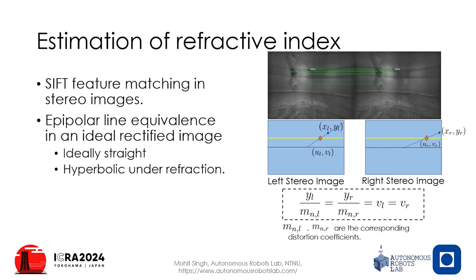At the core of the derivation lies the equivalence of the epipolar line of a given feature correspondence pair. Due to the refractive distortion, a straight epipolar line is warped into a hyperbola. Distortion coefficient M is found to warp the hyperbola back into a straight line, thus rectifying the image for downstream tasks such as visual inertial odometry.